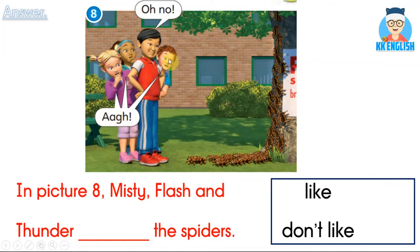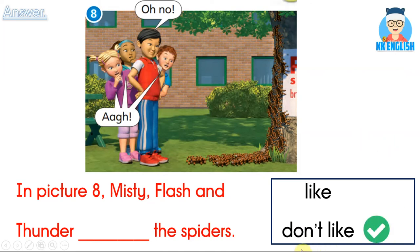Oh no! Misty, Flash 和 Thunder 都感到很害怕，全部躲在 Whisper 的后面。In picture 8, Misty, Flash and Thunder — like the spiders or don't like the spiders? 他们是喜欢还是不喜欢呢？看看他们的表情。Don't like — they don't like the spiders.